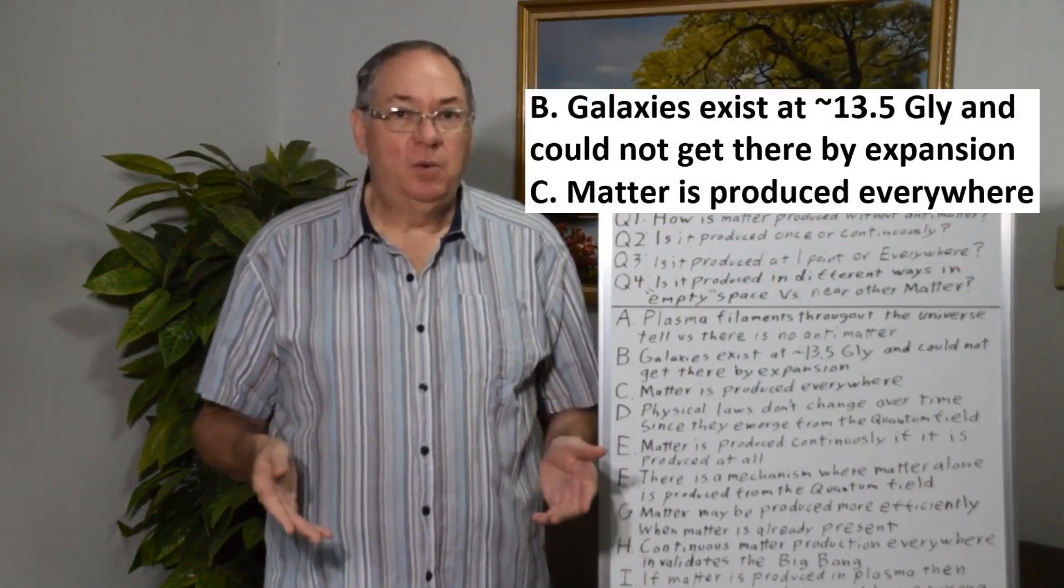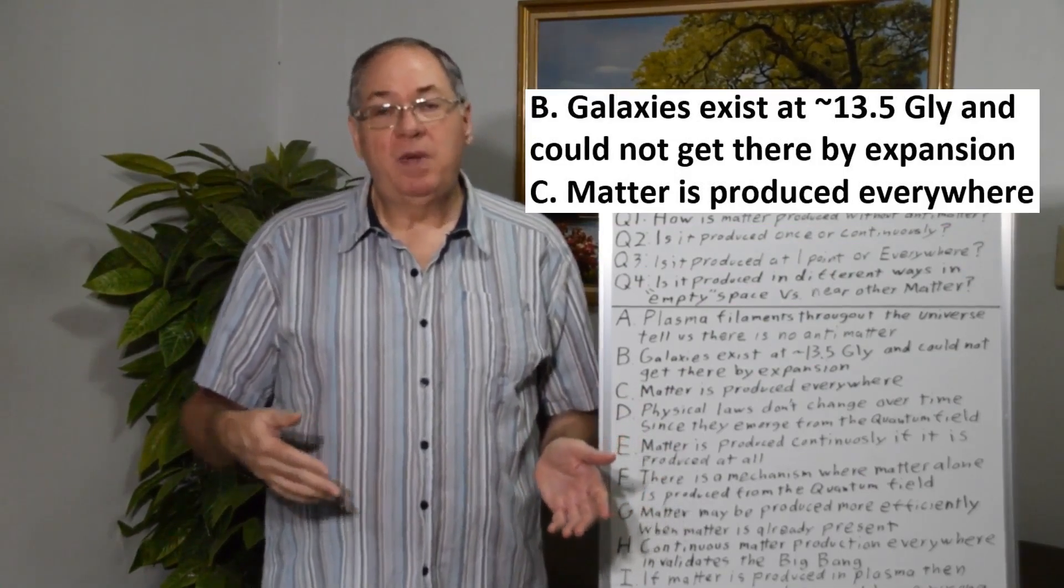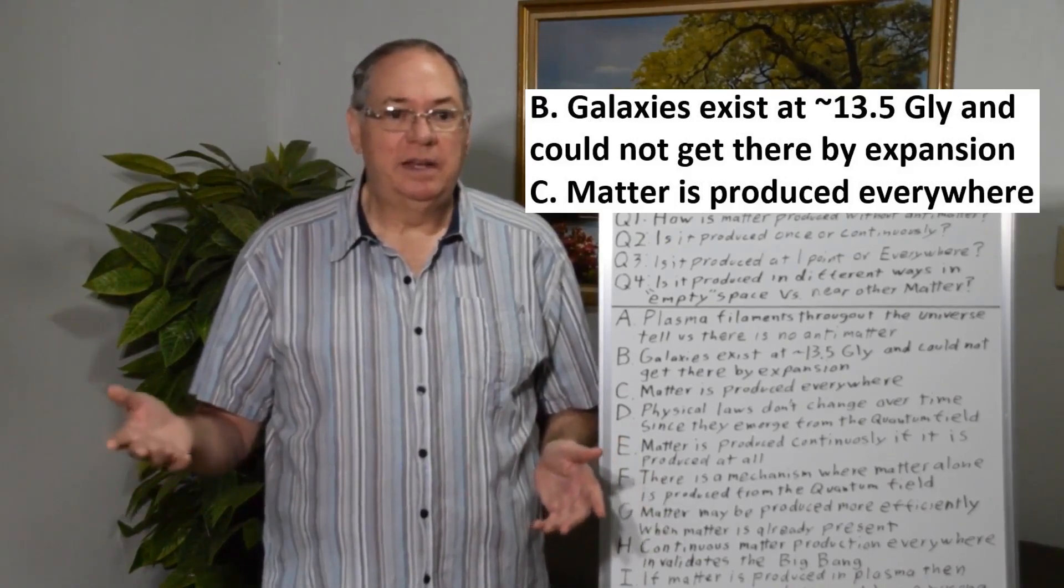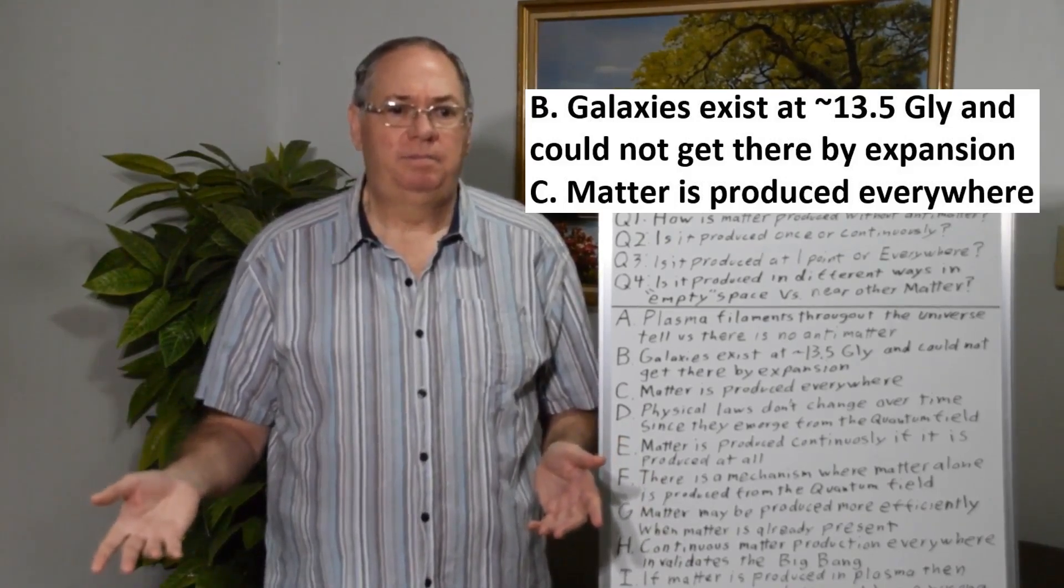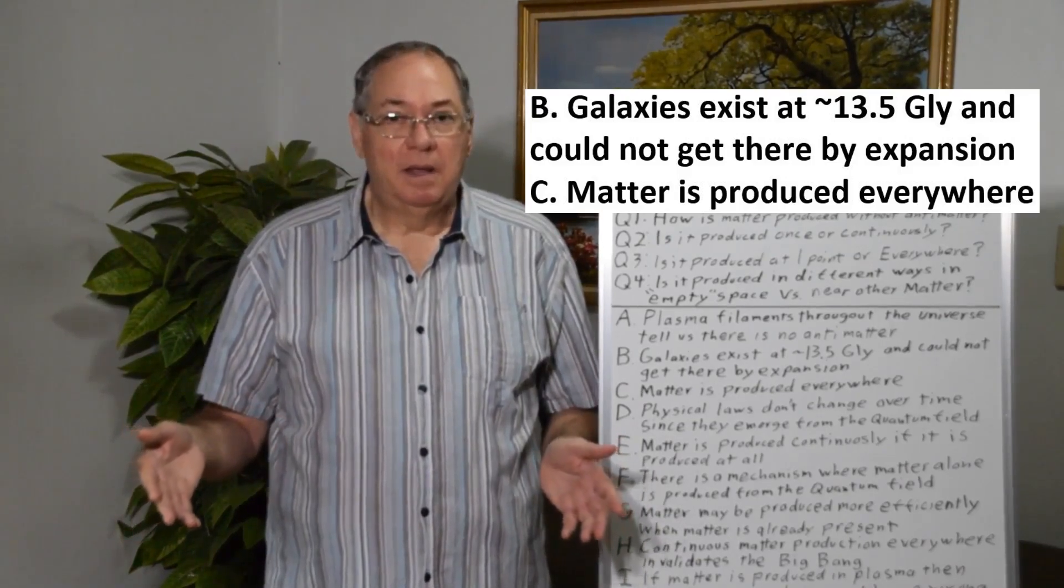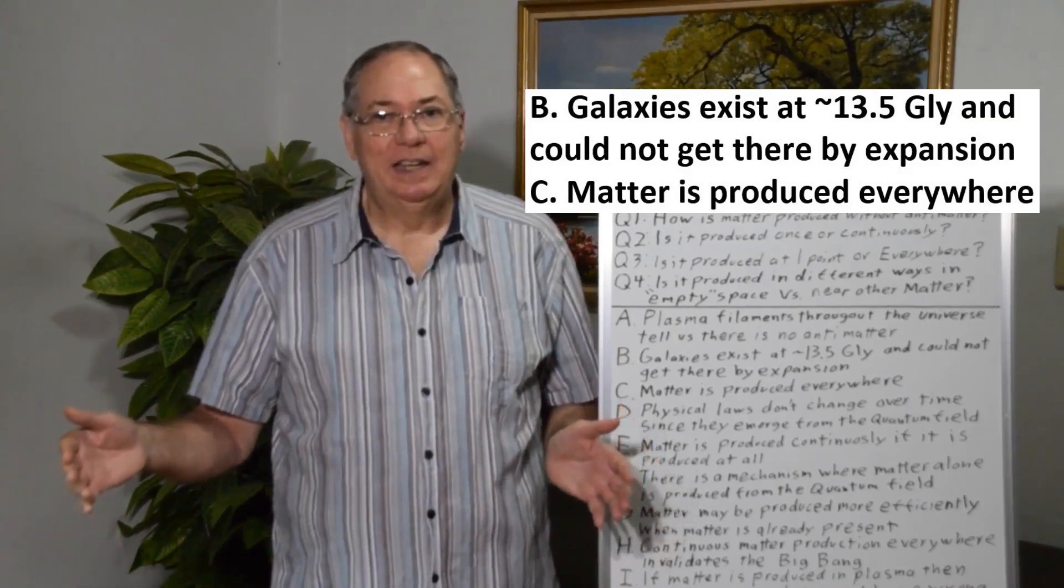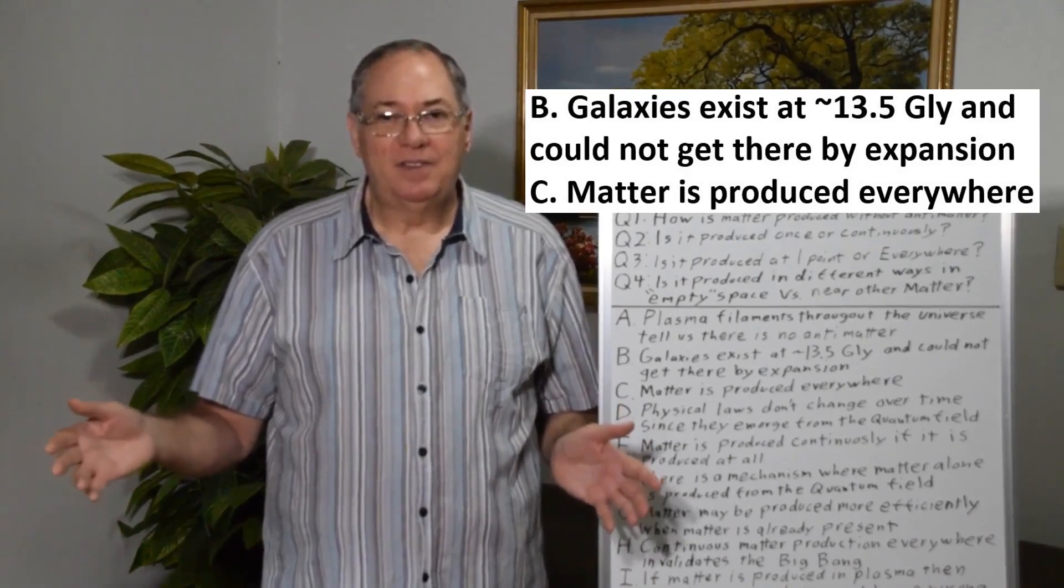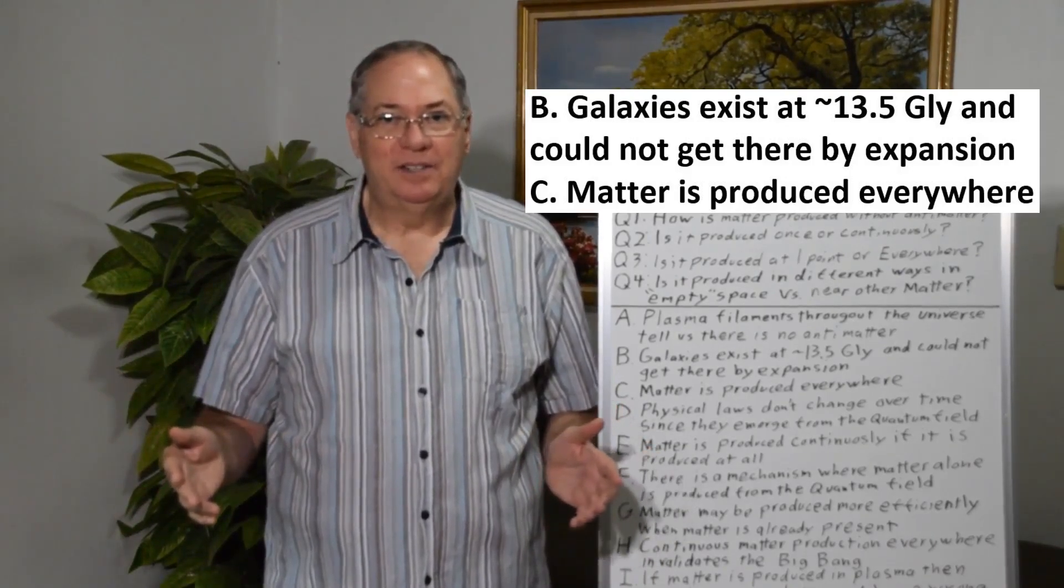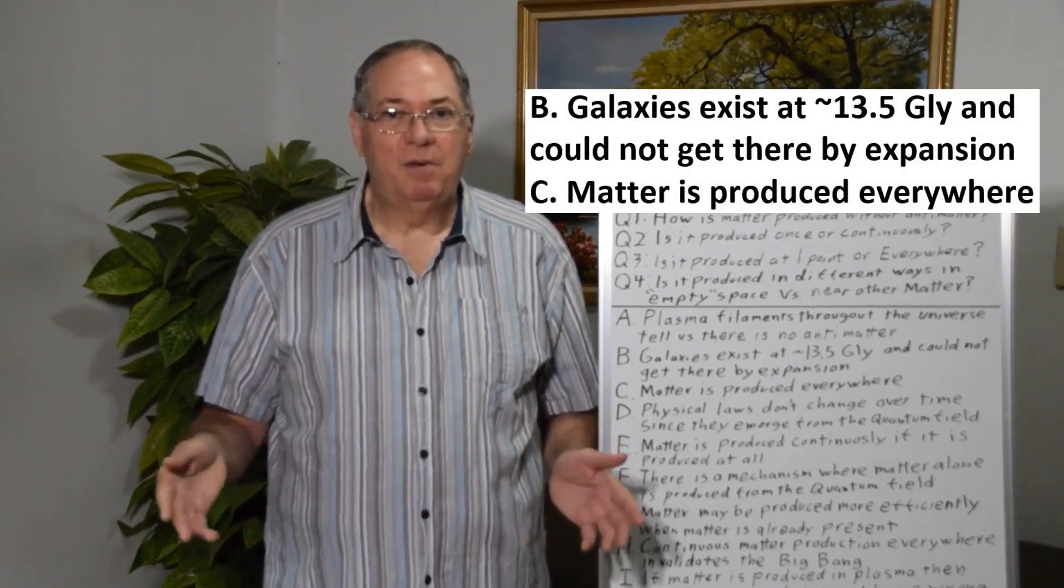We also know, especially with JWST, we can see galaxies as far away as 13.5 billion light years away. And we know that they didn't get there by expansion because space didn't expand instantaneously, much faster than the speed of light in the first few hundred million years of the universe, however you want to model it.